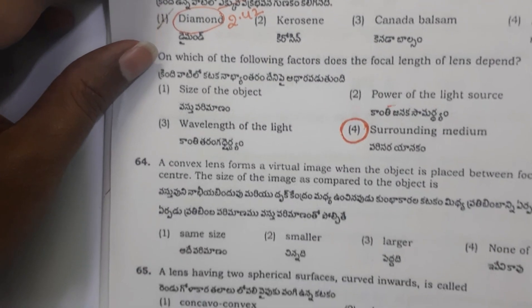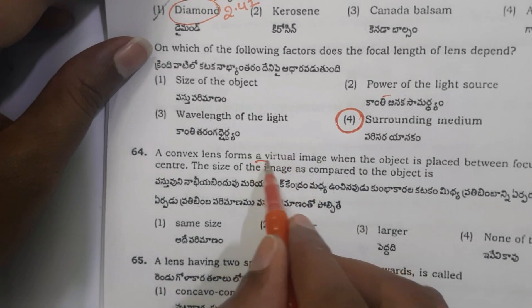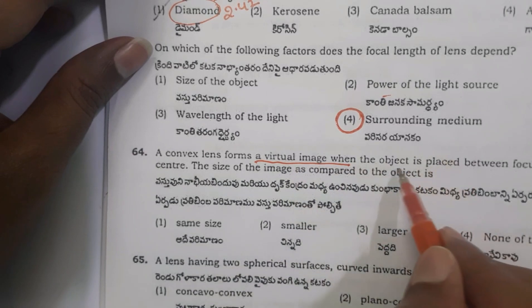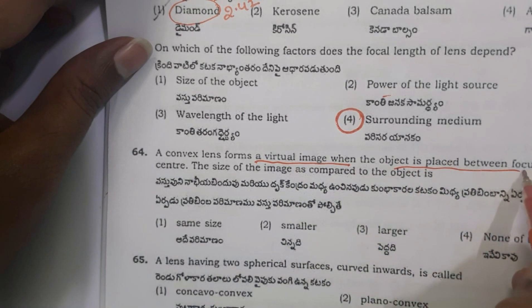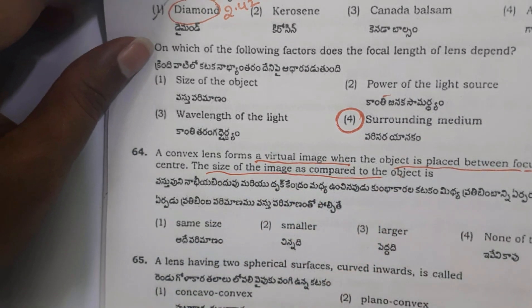Next, question 64: A convex lens forms a virtual image when the object is placed between focus and optic center. What is the size of the image compared to the object? We can understand this in the form of a ray diagram.